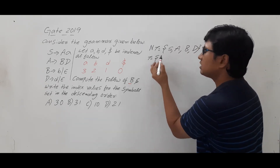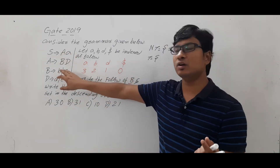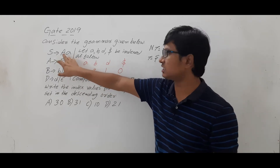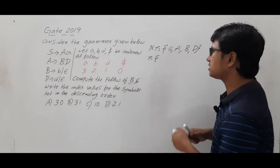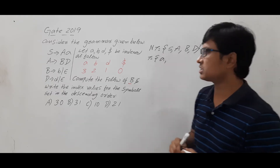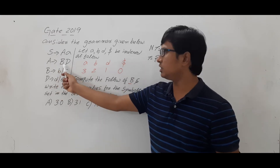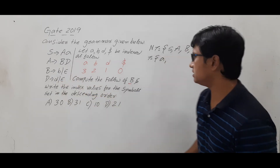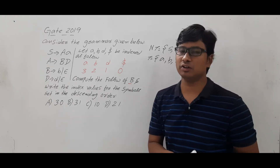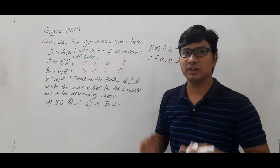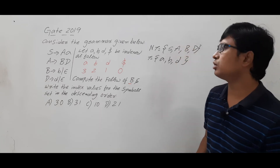The terminals are the symbols on the right-hand side other than the non-terminals. Looking at the productions, small 'a' is a terminal. B and D appear on the left-hand side so they are non-terminals. Small 'b' is a terminal and small 'd' is a terminal. Epsilon is not considered a terminal since its length is 0.